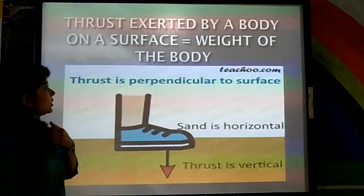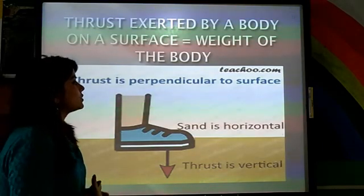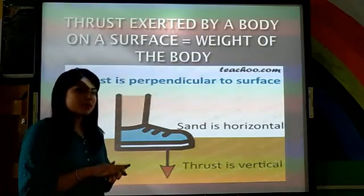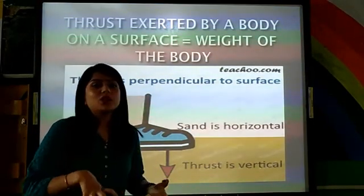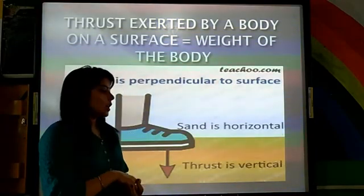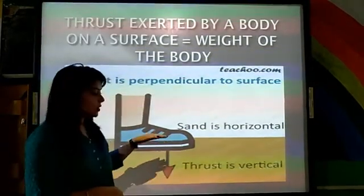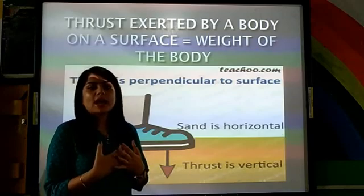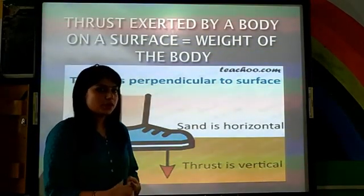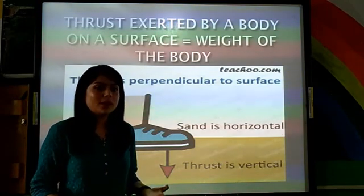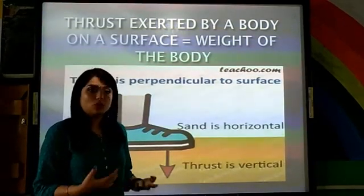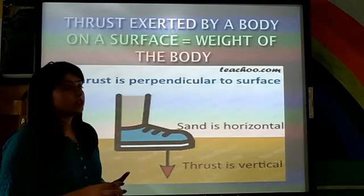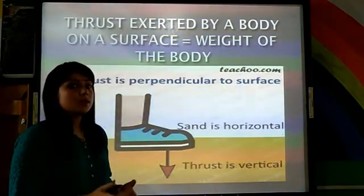Now in this diagram, thrust exerted by a body on a surface is equal to the weight of the body. To understand that, let us see this example: a person is stepping on sand. When a person steps on sand, there will be a cavity created — a depth created there. The amount of force or thrust exerted on the sand is equal to the weight of the body. Some people have more weight, some have less. So the person with more weight will exert more thrust, and the person with less weight will exert less thrust. More the weight, more the thrust.